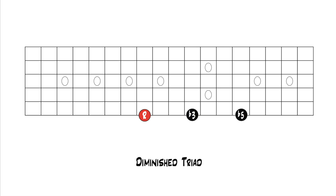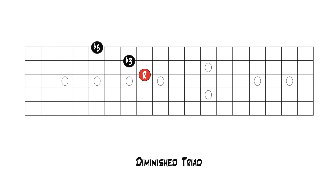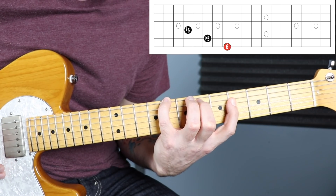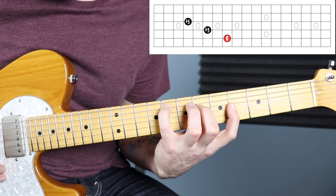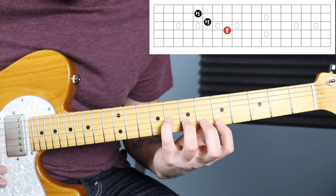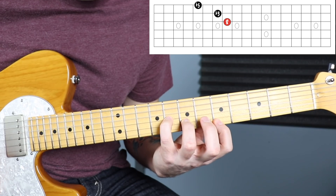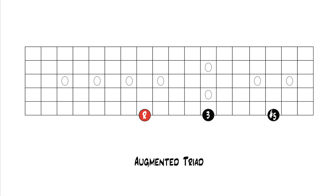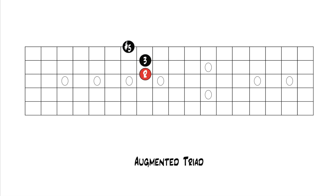The diminished triad is built with a root, minor third, and diminished fifth. Move them to adjacent strings to get the close position triad, then move that through the string sets. Every time a note hits the second string, it just needs to move up a fret, changing the shape. The augmented triad is a root, major third, and augmented fifth — same process. Moving through the string sets, any time a note hits the second string the shape changes. Those are the shapes of the augmented triad.